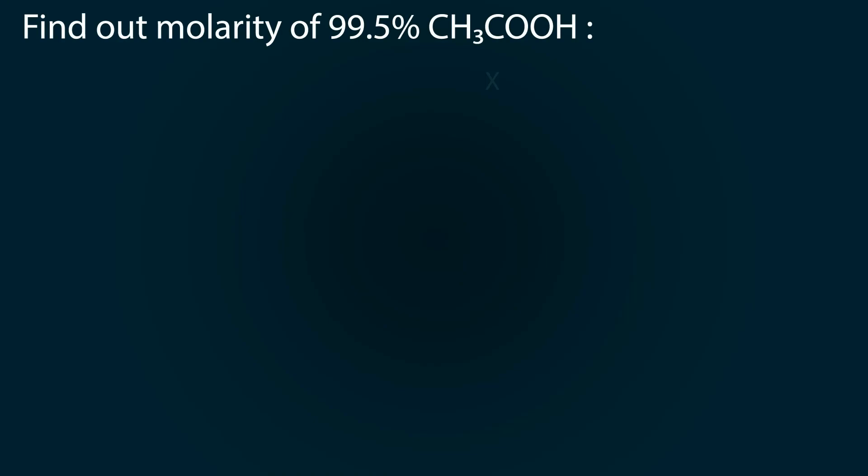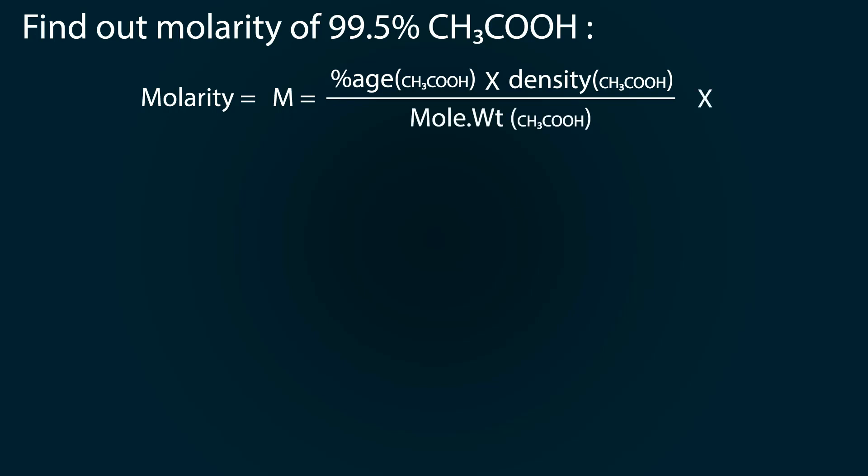Let's do some calculations to find out the molarity of 99.5% acetic acid. We have to use the formula: molarity is equal to percentage multiplied by density divided by molecular weight, whole multiplied by 10. The percentage is 99